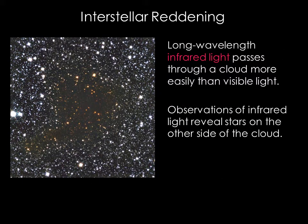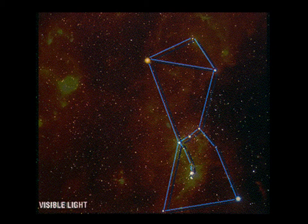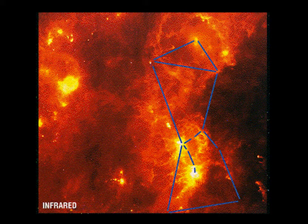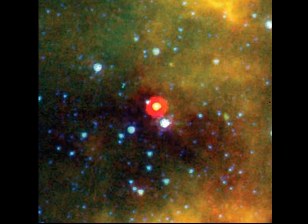Long wavelength infrared light passes through a cloud more easily than visible light. Therefore, observations in infrared light can reveal stars on the other side of the cloud. For example, the constellation Orion looks much different in the infrared. The bright region below the belt stars is an area of active star formation. And here is another example where observing the infrared light from a cloud can reveal a newborn star embedded inside it.